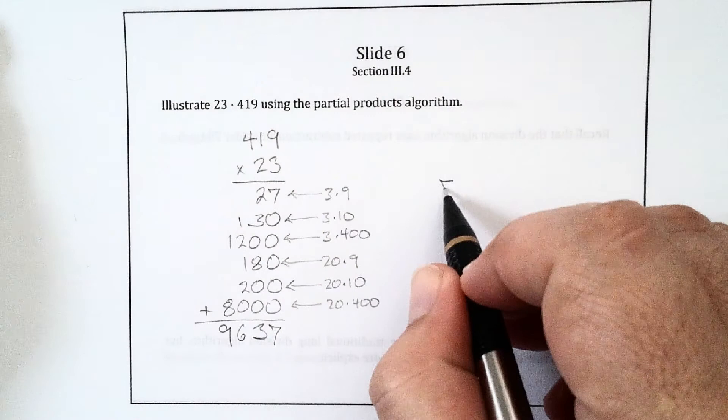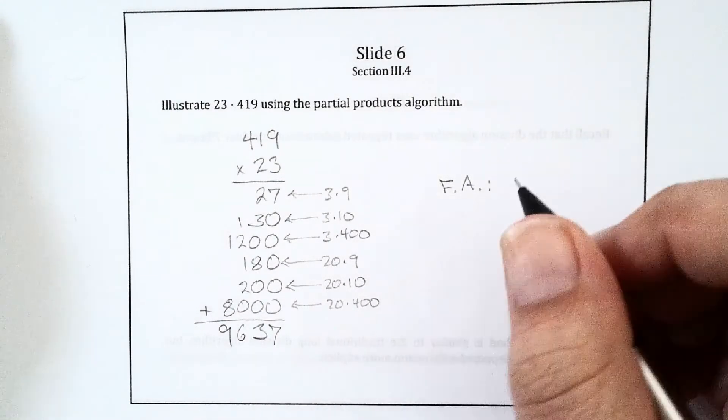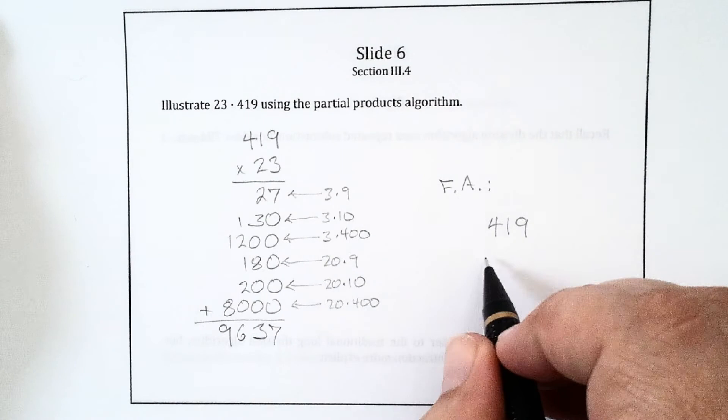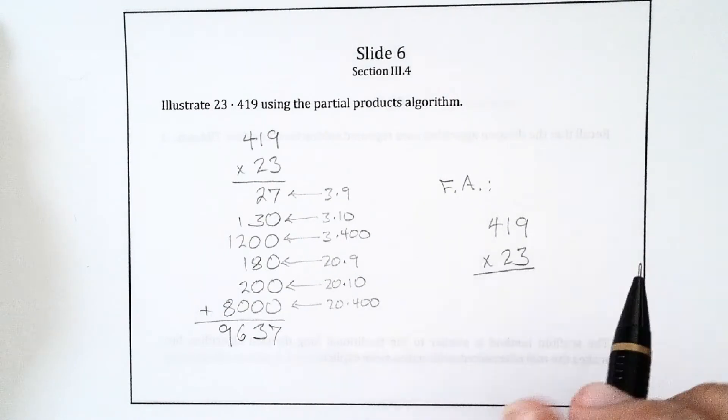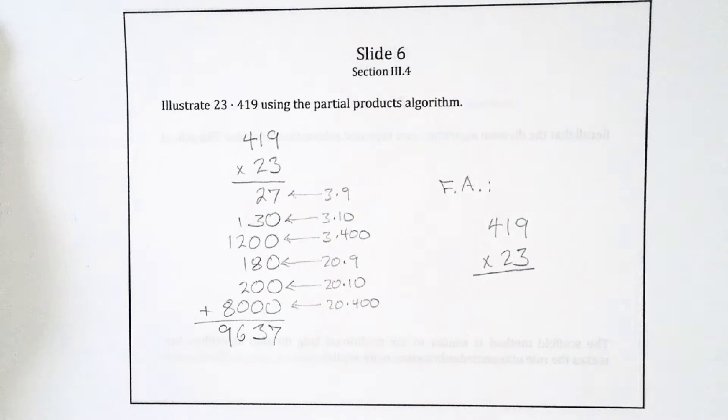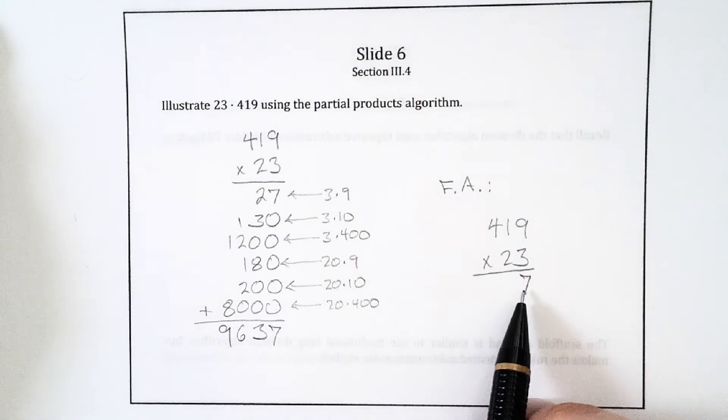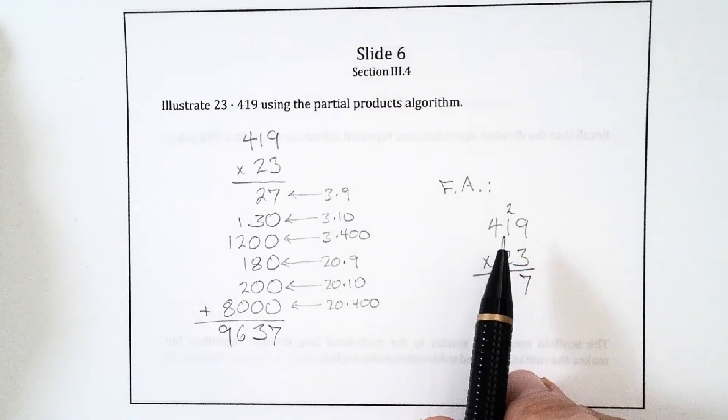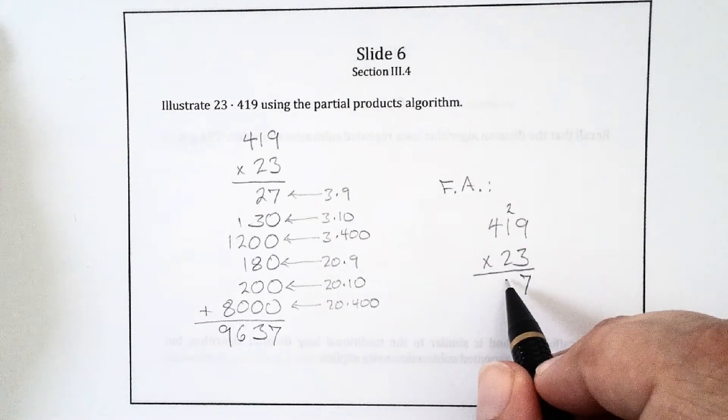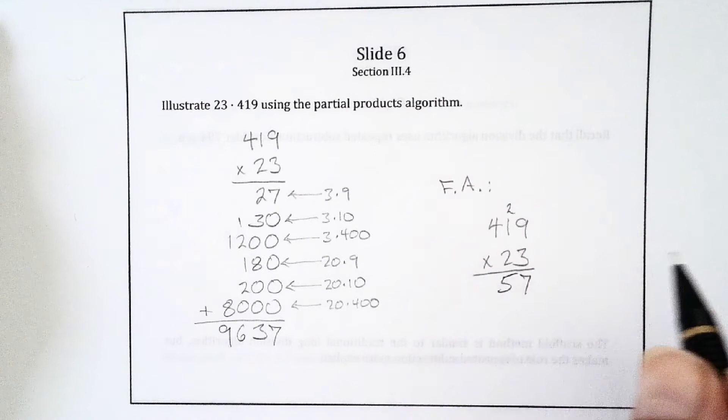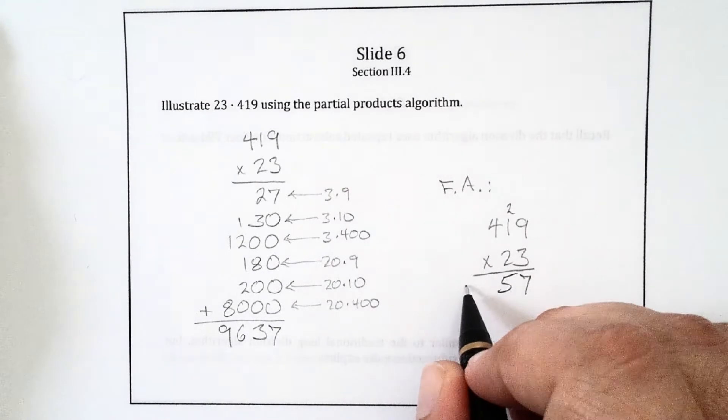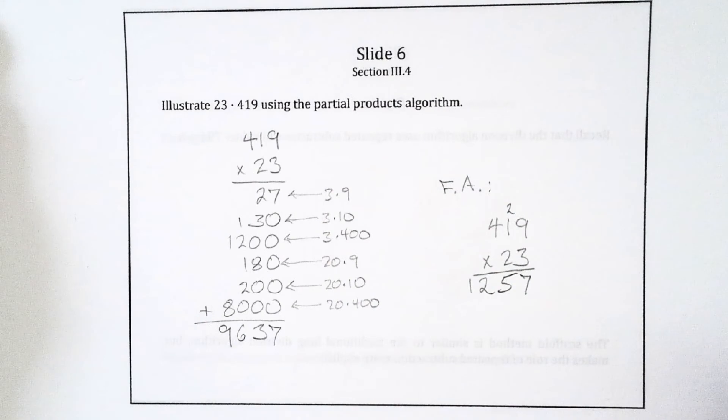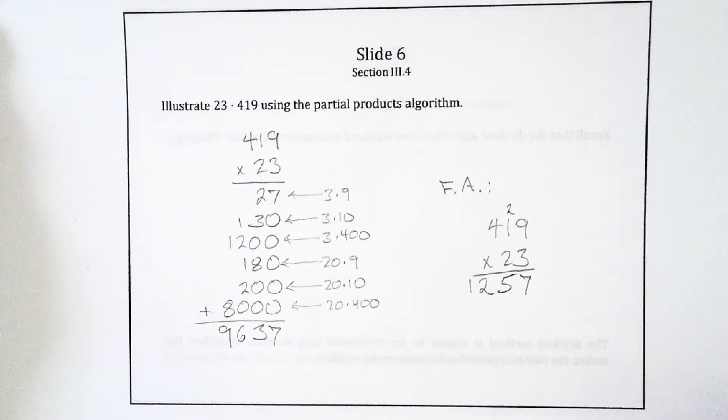And let's also look at the final algorithm, how you were taught to do it in grade school most likely. So you have 419 times 23. And I begin by doing the 3 times the 419, kind of all at once. I do 3 times 9, I get 27, so I put the 7 down, that's the 7 ones. And then the 21s I exchange for 2 tenths. 3 times 1 tenth plus 2 tenths is 5 tenths. And 3 times 4 hundredths is 1,200. So I get our 1,257 that we had at the bottom.